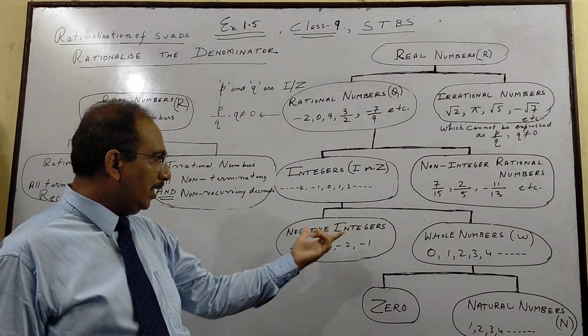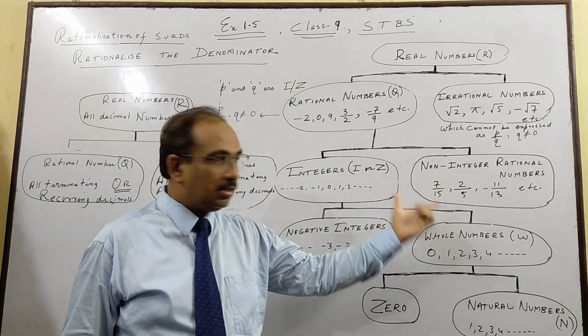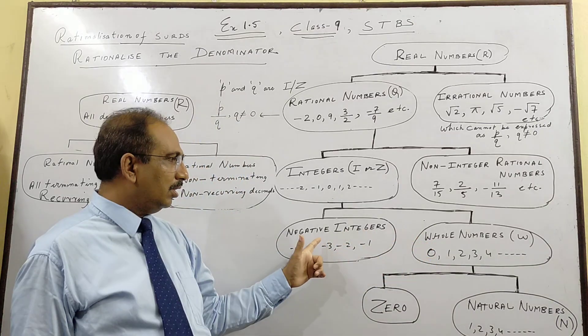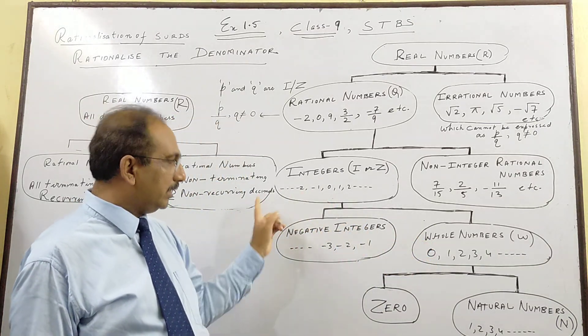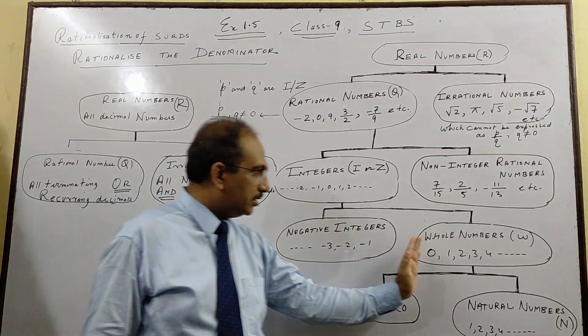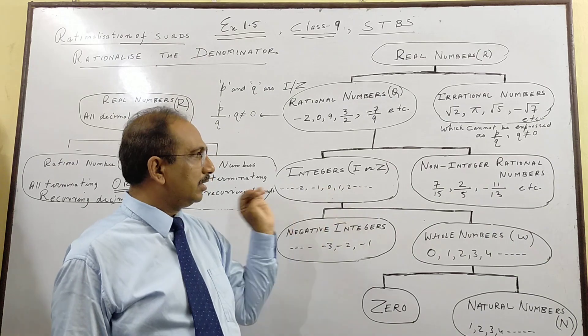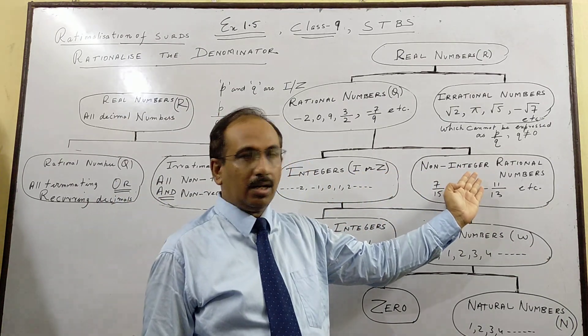Whole number, and if you add negative integers, see the table flow chart coming down, whole number with negative integers gives you integer. Because this is negative, 0 positive, this is what we have as you can see the integers.